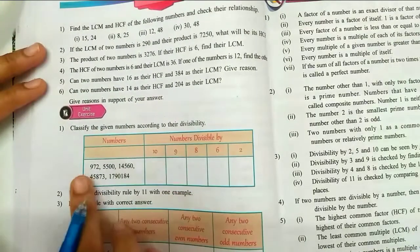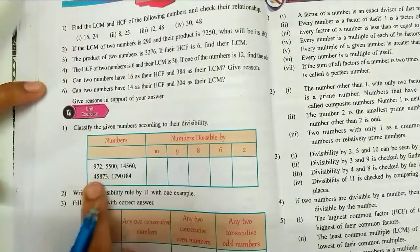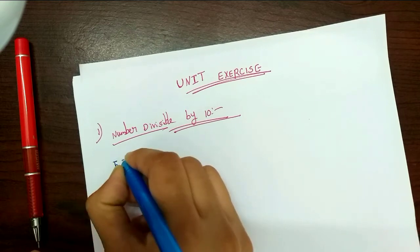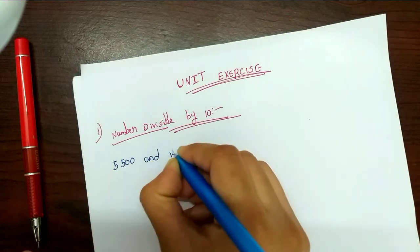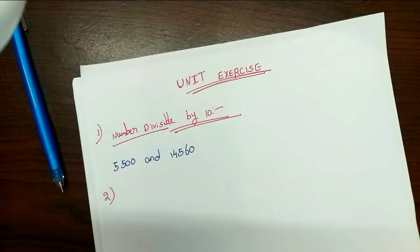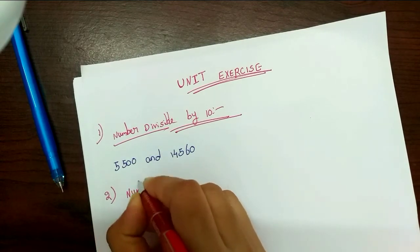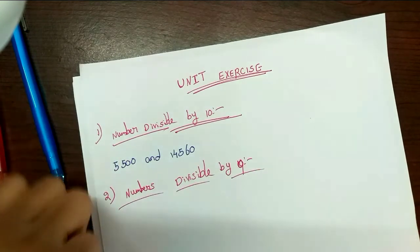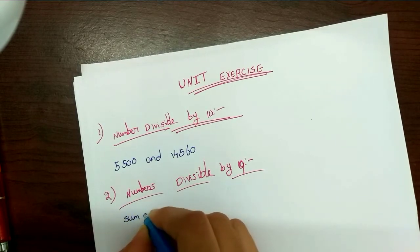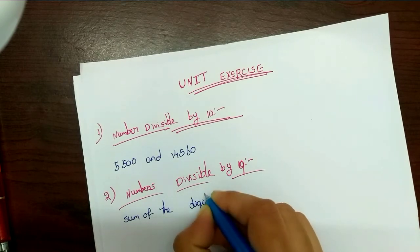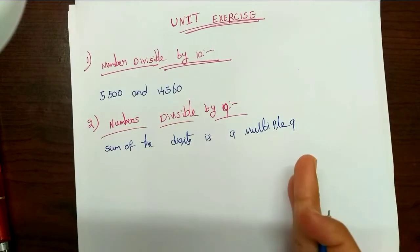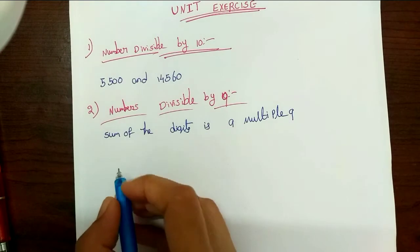Suppose the answer is not divisible by 9, then 972 is also not divisible by 9. So this is the method to check. The sum of the digits must be a multiple of 9. The multiples of 9 are: 9, 18, 27 — that is the 9 times table.